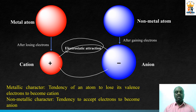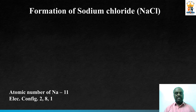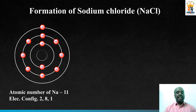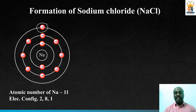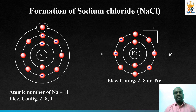Now let us see how sodium chloride is formed from sodium and chlorine atoms. The atomic number of sodium is 11 and its electronic configuration is 2, 8, 1. It has one valence shell electron. During the formation of sodium chloride, it loses that one electron and attains the inert gas configuration. After losing that one electron, sodium forms Na⁺ ions, which have the electronic configuration 2, 8 — the inert gas configuration of neon.